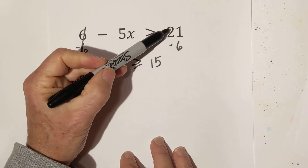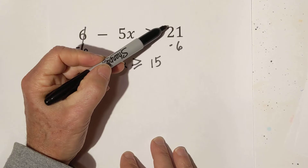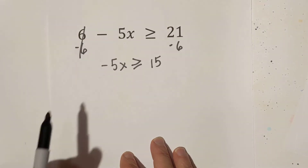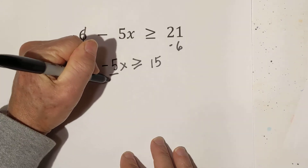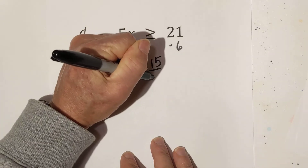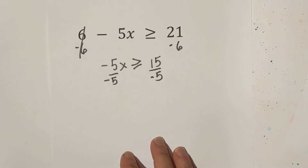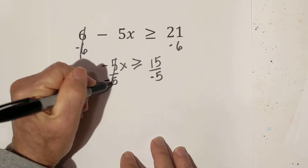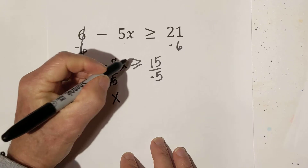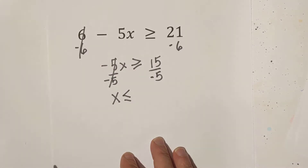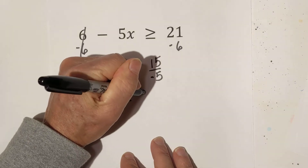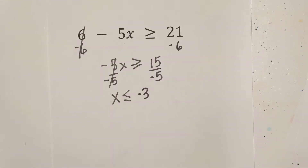Remember, whenever you subtract a positive and negative, you take the sign of the larger number. Now we have negative 5x. To undo multiplication, we need to divide, so we're going to divide both sides by negative 5. These cancel, we have x, and since we're dividing by a negative number, we're going to flip the sign. 15 divided by negative 5 is negative 3. That's example 1.